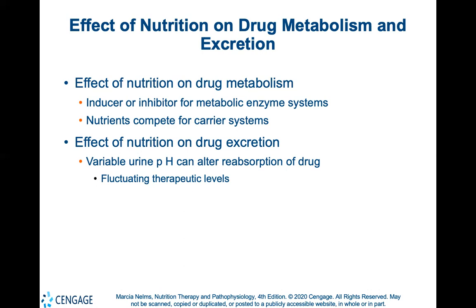The pH of the urine can vary widely, and this is one of the most important concerns related to maintenance of consistent drug excretion. Variable urine pH can alter reabsorption of the drug, resulting in fluctuating therapeutic levels. Dietary intake, kidney and respiratory function, acid-base balance, hydration status, and the presence of disease or infection can all alter urinary pH.